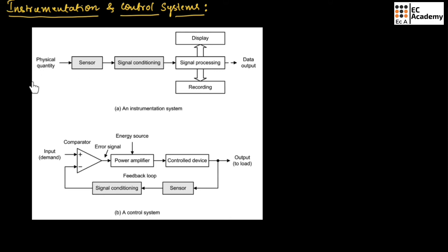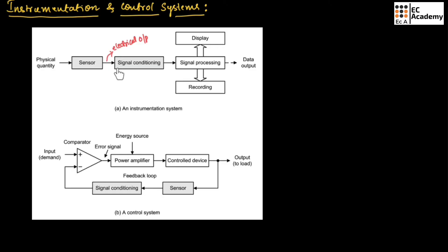This physical quantity might be a temperature. For example, if we are measuring temperature, it will act upon the sensor. The sensor, in response to the physical quantity, will produce an electrical output signal. These electrical signals produced by the sensor may be small or may contain noise — unwanted signal — that is why signal conditioning is required, so that these electrical signals will be in an acceptable form for signal processing.